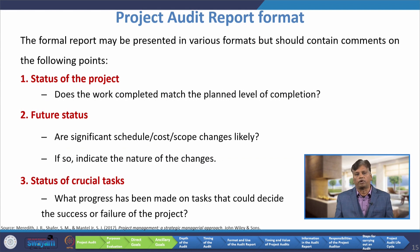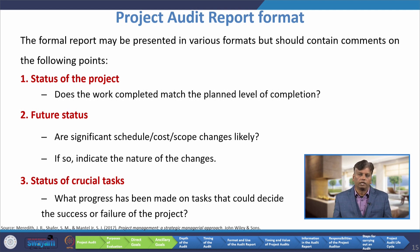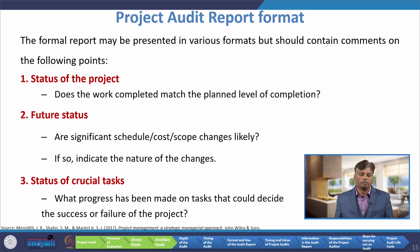Now we will discuss about the project audit format. The audit report may be presented in various formats, but should contain comments on the following points. One is the status of the project — it should mention whether the work completed matches the planned level of completion. Then it has to discuss about future status, including any significant schedule, cost, or scope changes likely, and if so, indicate the nature of the changes. The third point is the status of crucial tasks.